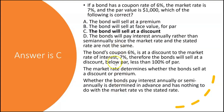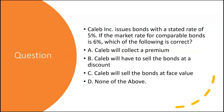Note that whether bonds pay interest annually or semi-annually is determined in advance and has nothing to do with the relationship between the market rate and the stated rate. The market rate is not known until the moment the bonds are issued, whereas the stated rate and interest payment dates are known well in advance — whether semi-annual twice a year or annual once a year.